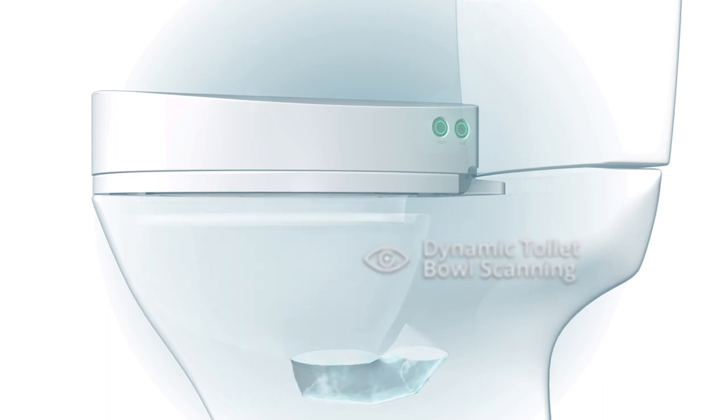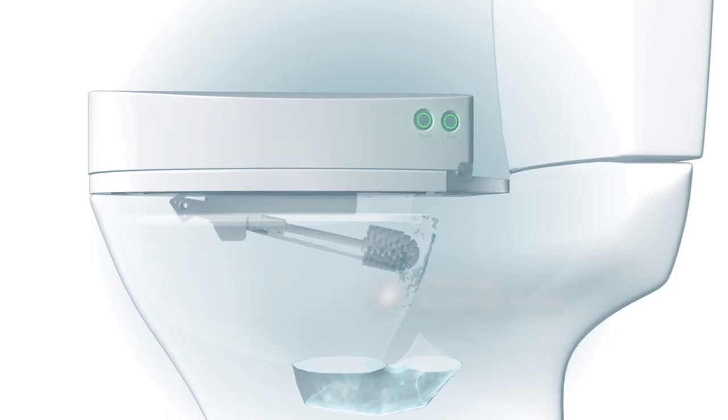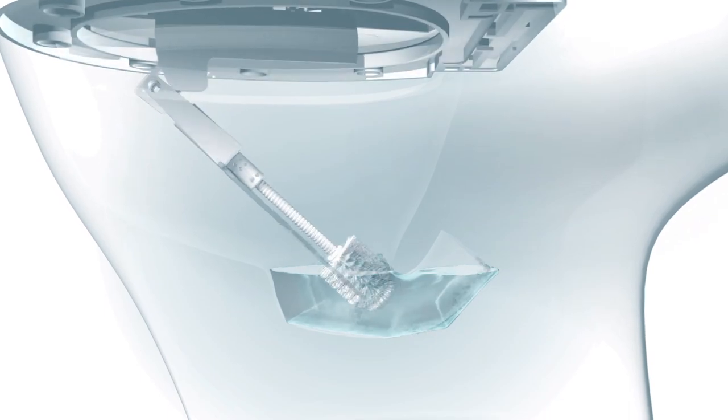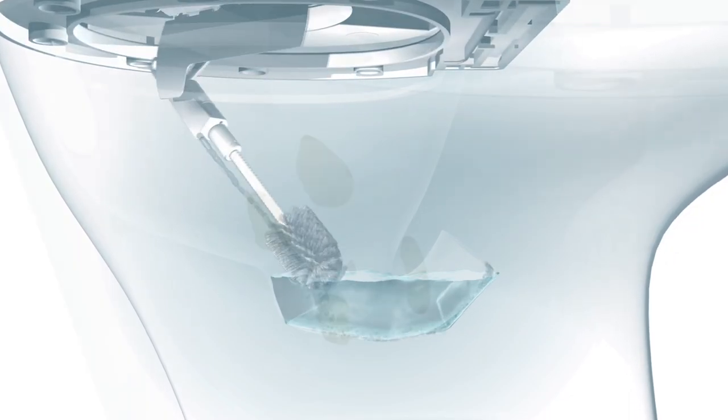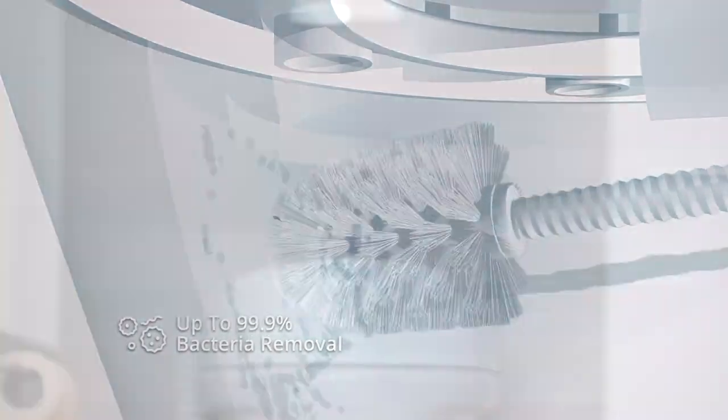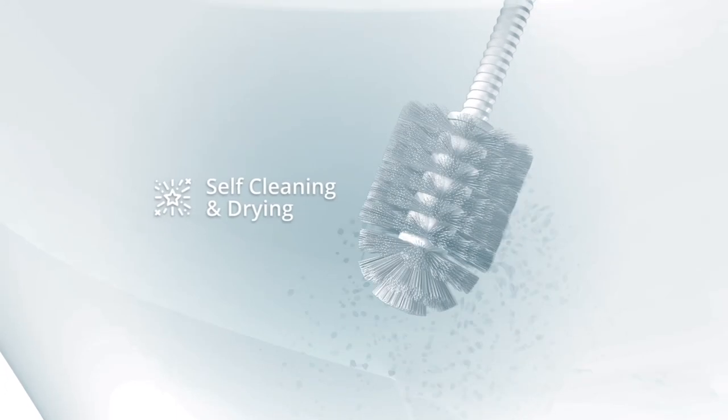A smart sensor scans your toilet shape, and a robotic arm emerges from a hidden compartment to reach every spot in the bowl. Equipped with jets of water and soap, the brush rapidly rotates even underwater. Dirt and bacteria don't stand a chance. You won't need to do anything—the brush cleans and dries itself.